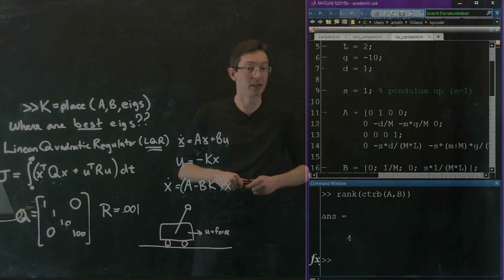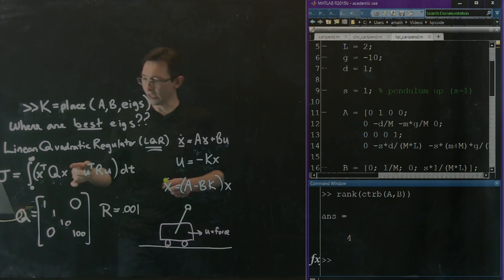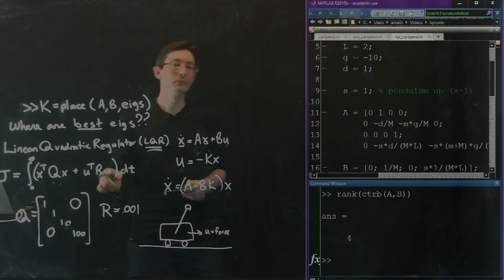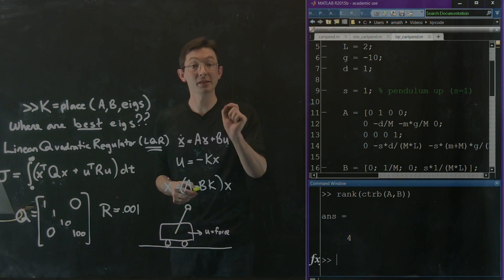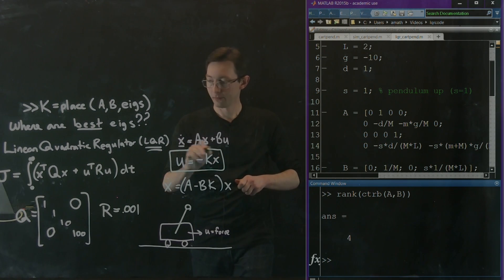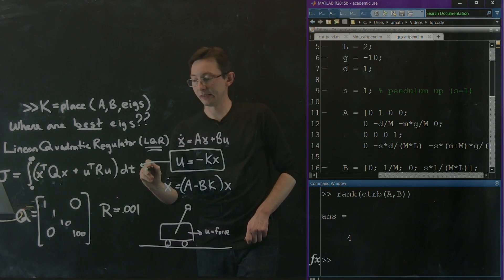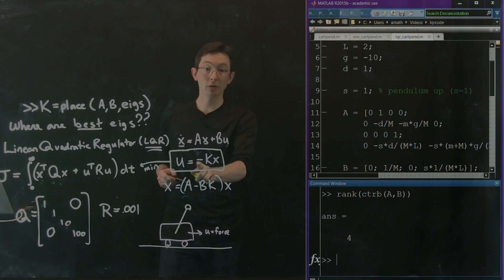And so in MATLAB, if you have Q and R, it turns out that there is an optimal K matrix, an honest to goodness best K protocol. There's a best control law that minimizes this cost function. And that's called the linear quadratic regulator. So this controller is the linear quadratic regulator.